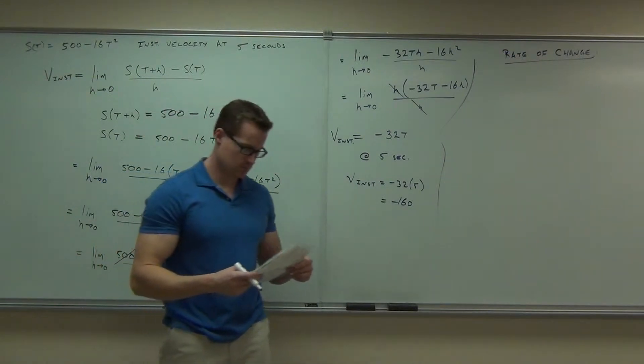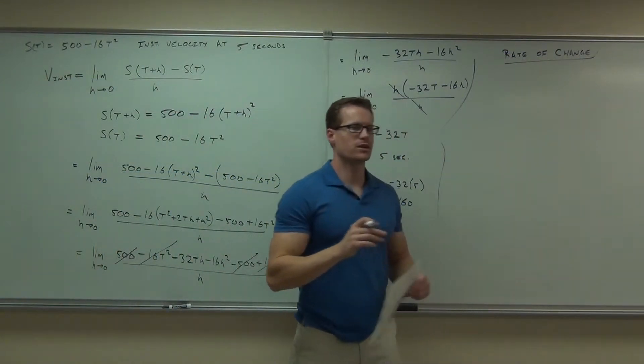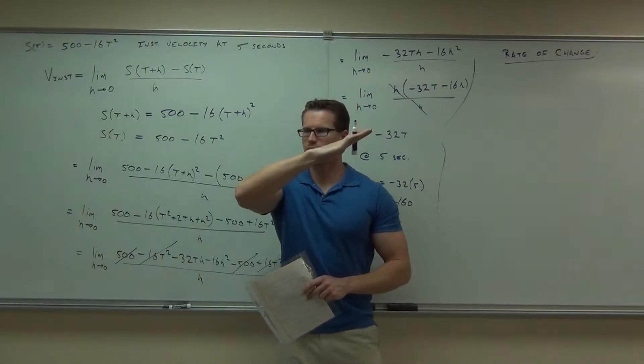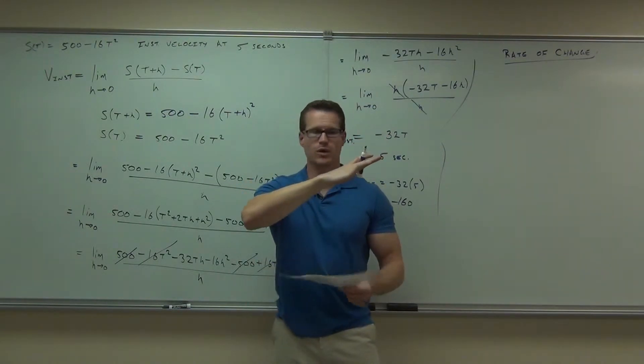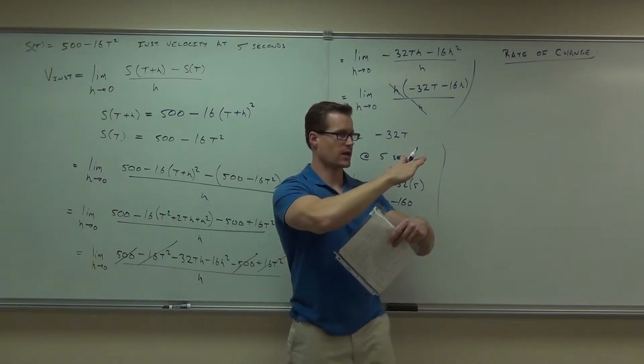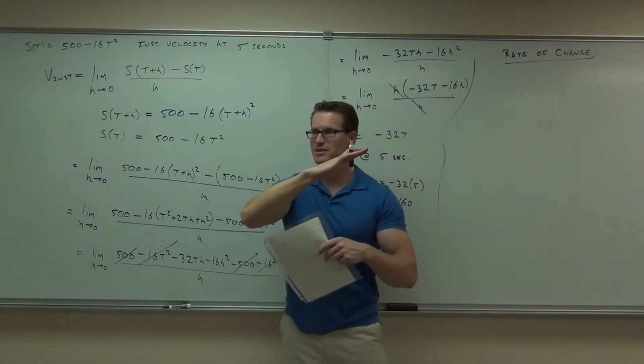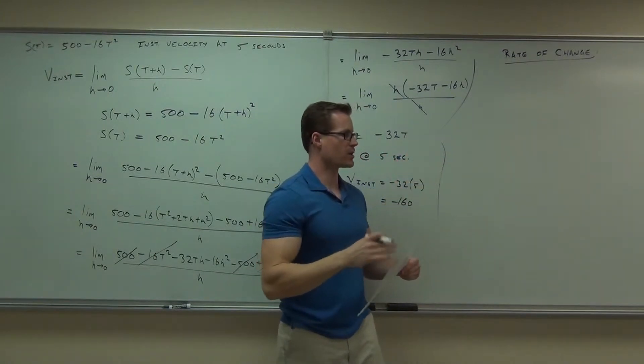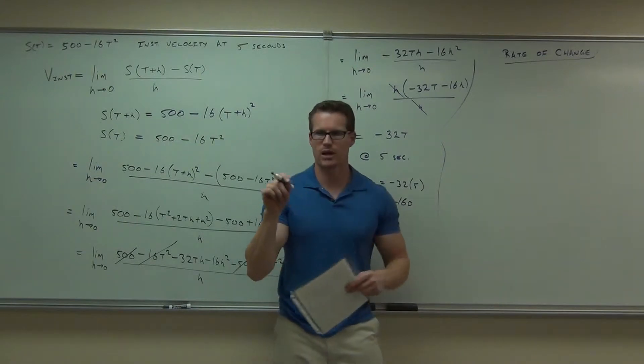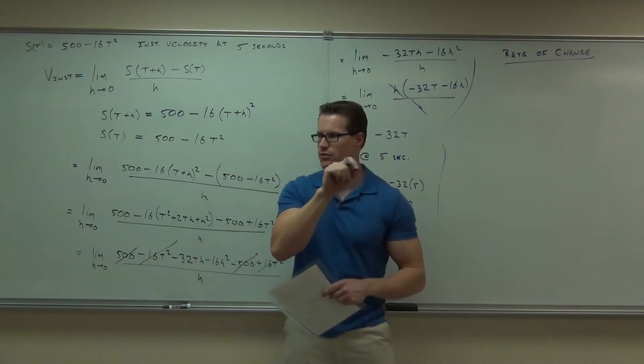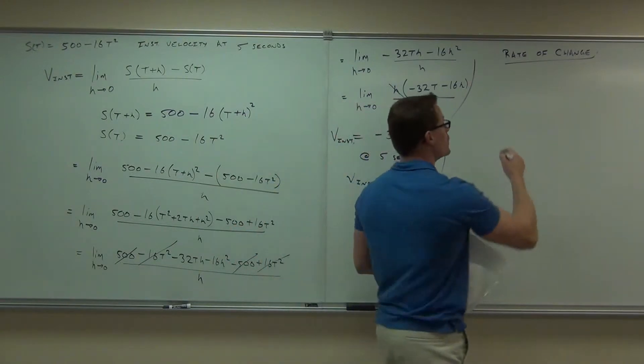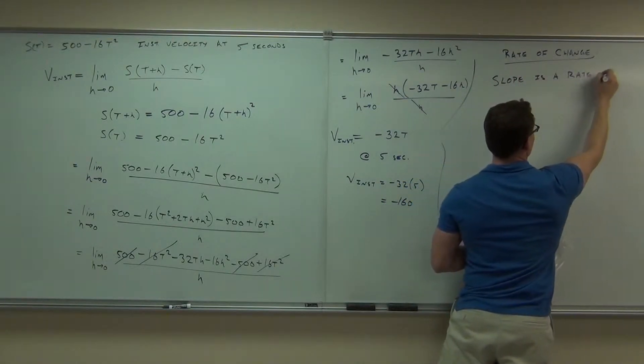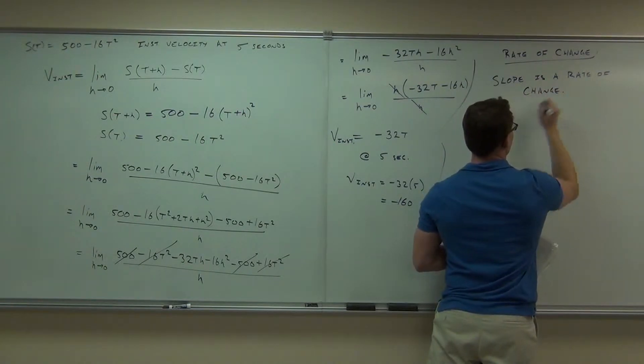The other thing we're going to find out is something about rates of change. Rate of change. You know, we normally say that what is our rate of change? For instance, if I give you a straight line like this, what is the rate of change? What do we call that? Slope. Slope. All that stuff, that's a rate of change.